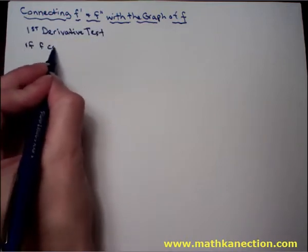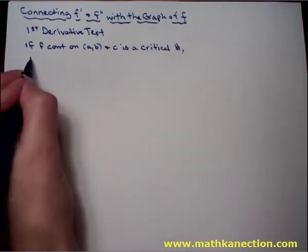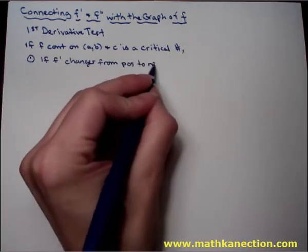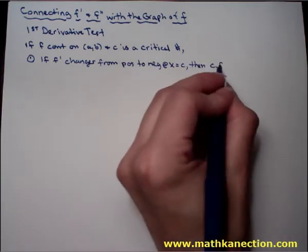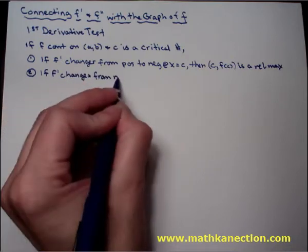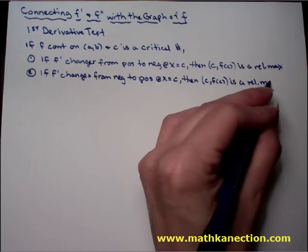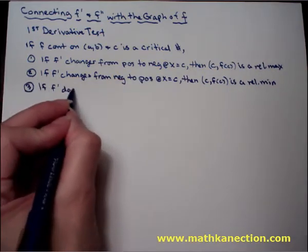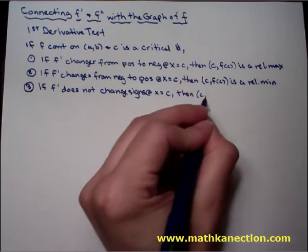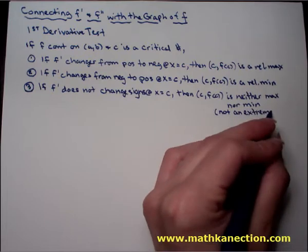Recall from the previous section that the first derivative test determines the extrema and where the function is increasing or decreasing. If f is continuous on (a, b) and c is a critical number: if f prime changes from positive to negative at x equals c, then c comma f(c) is a relative max. If f prime changes from negative to positive at x equals c, then c comma f(c) is a relative min. If f prime does not change signs at x equals c, then that point is neither a max nor a min — it is not a relative extrema.